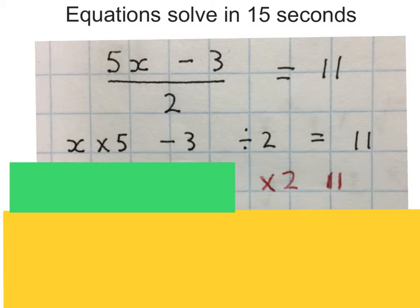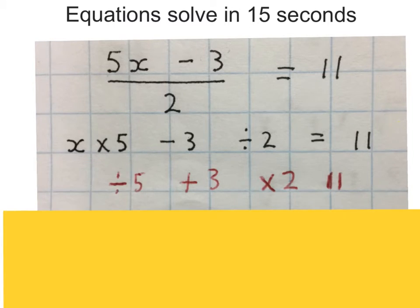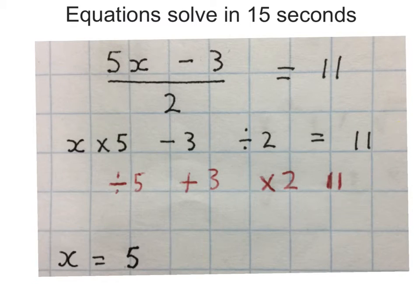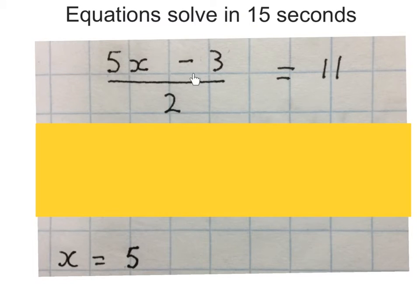Because we minus 3, we plus 3, which is 25. And then because we times by 5, we divide by 5, which is 5. So moving this stuff away from x, furthest first: we times by 2, take away the minus 3 by adding 3, then divide by 5, and x equals 5.